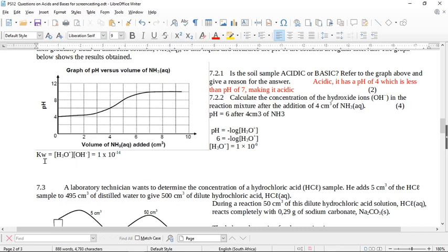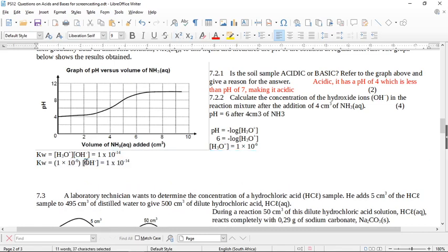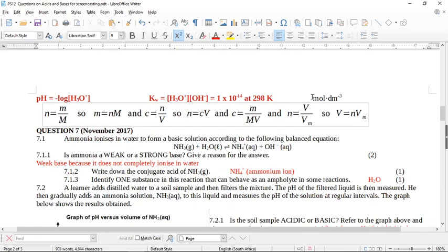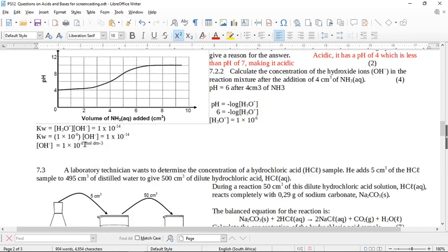So we're going to use this formula here, KW equals the proton concentration times the hydroxide ion concentration because 1 times 10 to the negative 14. So we write out the formula and then we start substituting KW equals this value. Okay, multiplied by the hydroxide ion concentration. And this is going to equal 1 times 10 to the negative 14. So by the power of algebra. Okay, what will my hydroxide ion concentration be? My hydroxide ion concentration is going to be 1 times 10 to the power of negative 8.